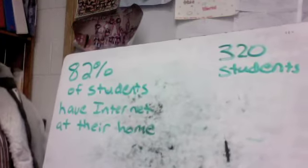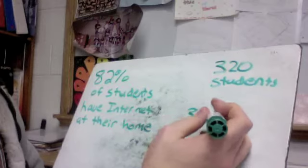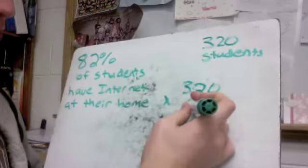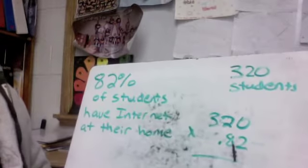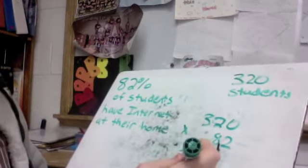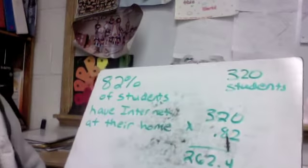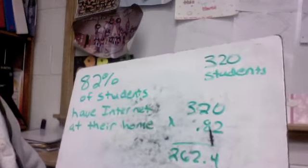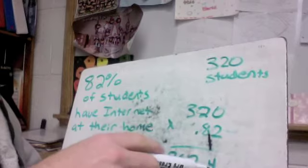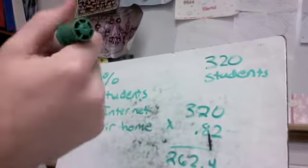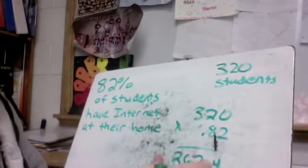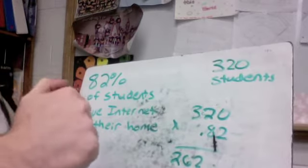You have to know how many kids there are altogether. So we'll say there's 320 students altogether in the schools. If I want to figure out how many kids have internet at their house, I just need to do 82% of 320. So I can multiply 320 by 82% as a decimal, which would be 0.82. And if I do 320 times 0.82, I get 262.4. We're not going to want to write this because you can't have 4 tenths of a person. We would say that 262 students have internet.